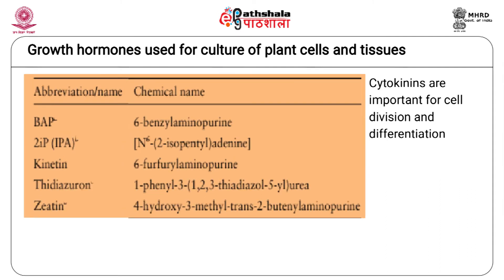Besides auxins, cytokinins are also used in most culture media and they induce cell division and differentiation. The in vitro response of the cultured cells or tissues depends on the ratio of auxin to cytokinin used, with higher auxins favouring callus or root growth and higher cytokinins favouring shoot bud differentiation. Manipulation of the levels of these two hormones is carried out over several subcultures in order to get the development of a complete plant.